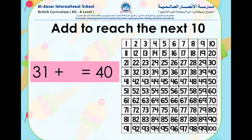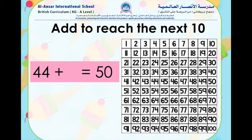Let's try another one. Here we have the number 31. Look for 31 on the number chart, then count how many to reach the next 10. The next group of 10 is the number 40. So how many blocks do we need to count to reach 40? 31 plus 9 equals 40.